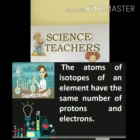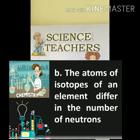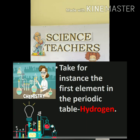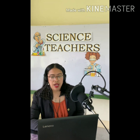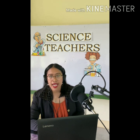The atoms of isotopes of an element have the same number of protons — the positively charged subatomic particle — and electrons, the negatively charged subatomic particle. The atoms of isotopes of an element differ in the number of neutrons. Take for instance the first element in the periodic table, which is hydrogen (H). The three most common isotopes for the hydrogen atom are protium, deuterium, and tritium.